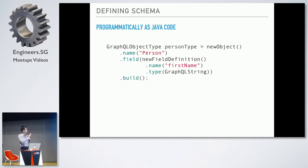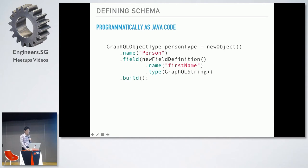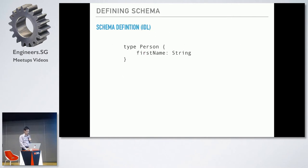I'll show the first approach — creating the schema using Java code. We create a new object type for person, name the object person, add a new field definition with first name of type string, and then build. The second way — using schema definition — we just type: type person, open bracket, close bracket, and first name is string. Both achieve the same thing — creating a new object type — but the schema definition is clearer and easier to write.